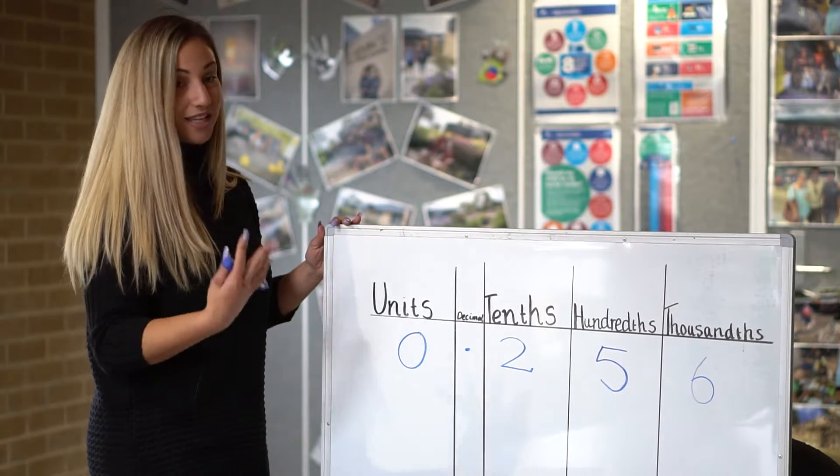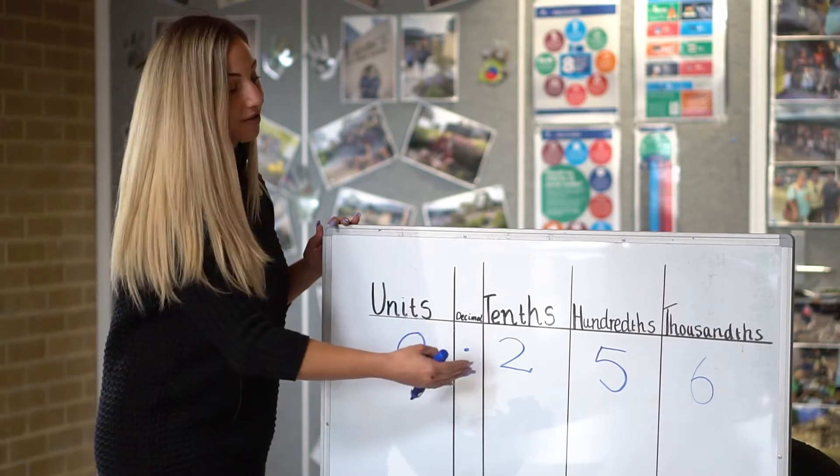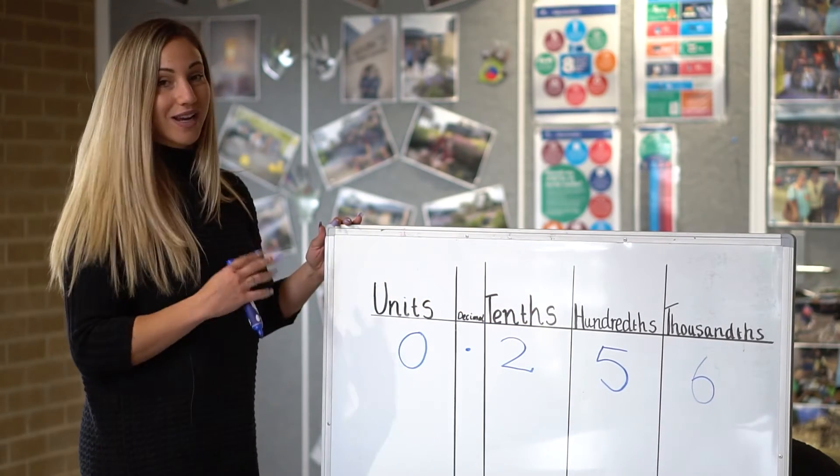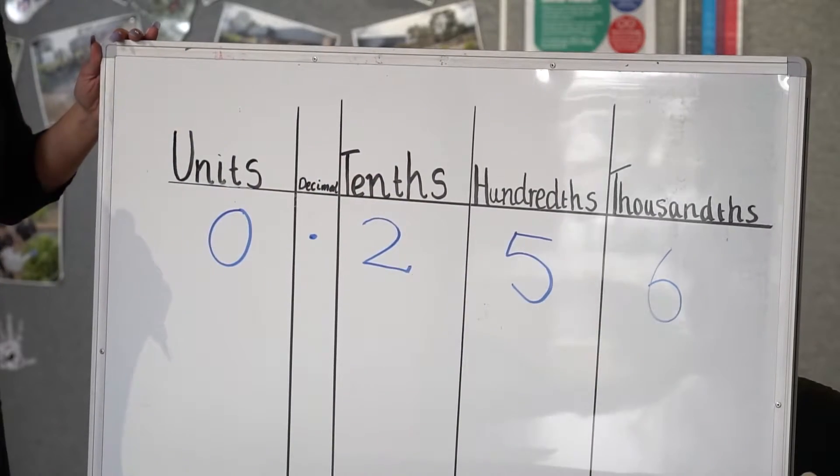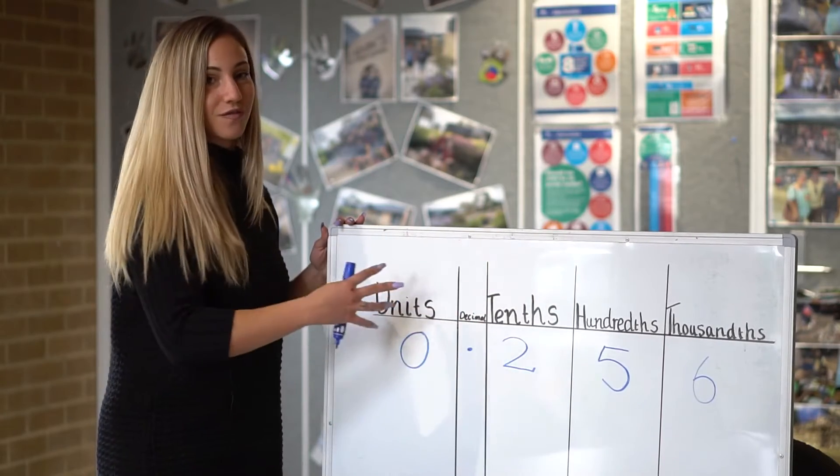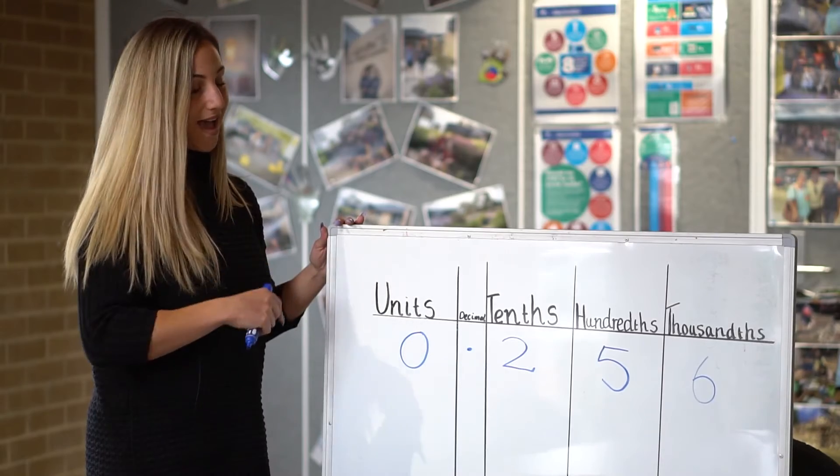The kids are aware we don't call this decimal 0.256. The correct vocabulary is two hundred and fifty-six thousandths because now we have two hundred and fifty-six equal parts out of one thousand.